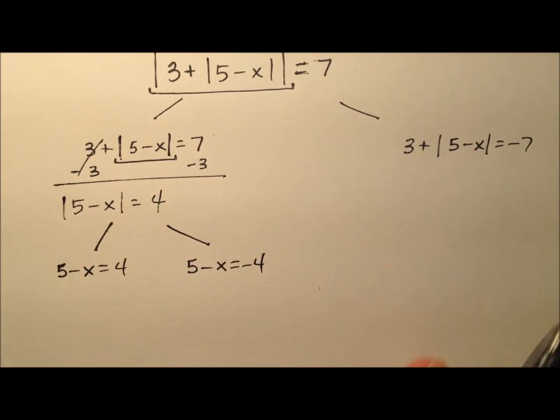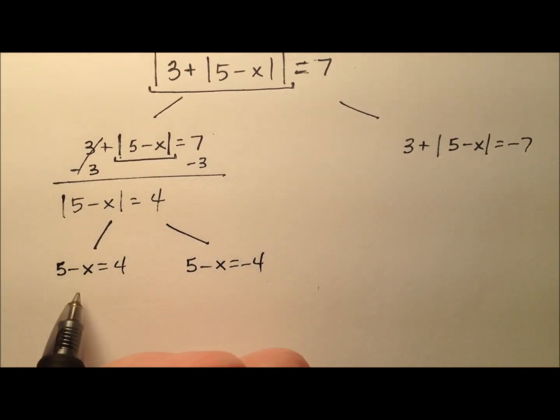So you kind of see we're going to have multiple answers and not just 2. So this one negative x equals negative 1, so x equals 1. Here, negative x equals negative 9, so x equals 9. So here are two possible values.